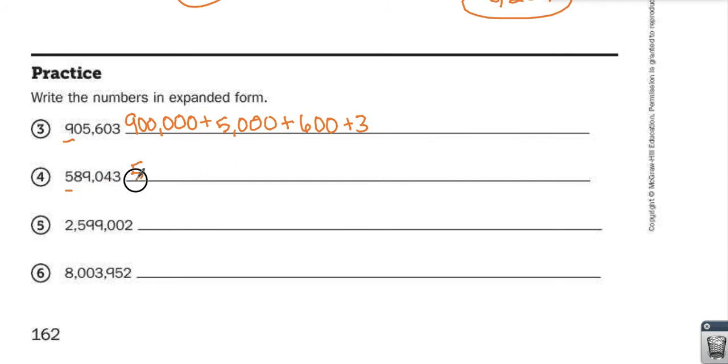Here I have 5 in the 100,000s place, plus 8 in the 10,000s place, plus 9 in the 1,000s place, plus 4 in the 10s place, plus 3.